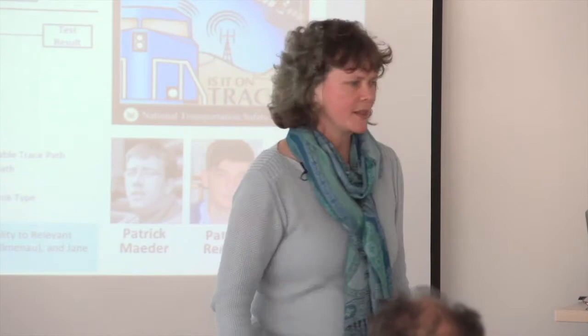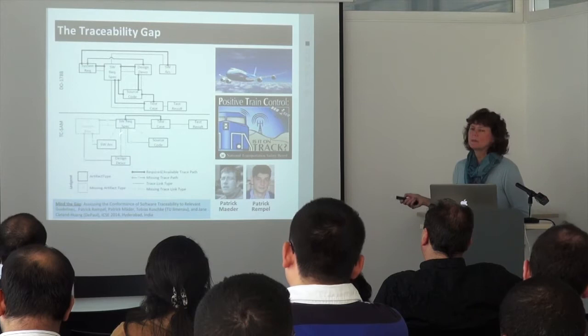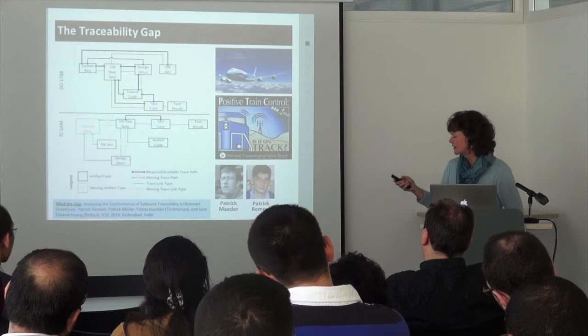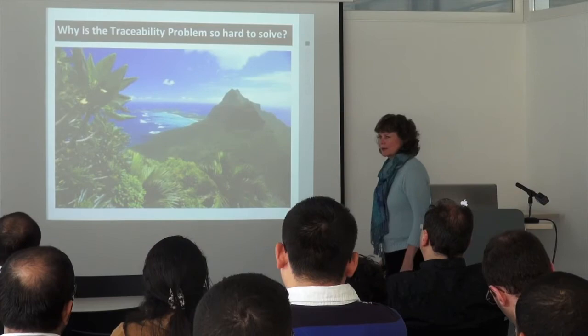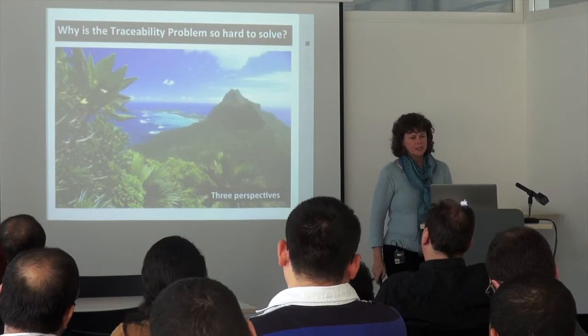The open question is: which one is right? Do we need to give industry better tracing tools so they can meet that bar, or do those standards need to change? People have been working on this problem since about 1995 — why is it so hard to solve? I think one of the reasons is that there are three perspectives, and you can't solve the traceability problem without bringing a solution that hits all three. A lot of computer science research allows you to come up with an algorithm that solves a problem and your job is done — that's not the case for software engineering research.